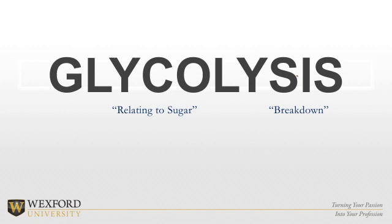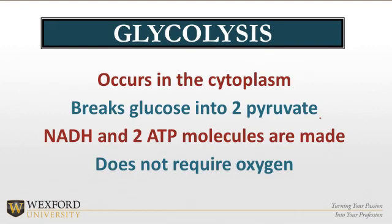So let's look at glycolysis. Like I always say, the meaning is in the word. 'Glyco' means relating to sugar, and 'lysis' means breakdown — so we are breaking down glucose. A couple of things about glycolysis: just like the creatine phosphate system, this happens in the cytoplasm — we haven't gotten to the mitochondria yet. It breaks down glucose to 2 pyruvate. NADH and two ATP molecules are made. And once again, it is anaerobic — it does not require oxygen.